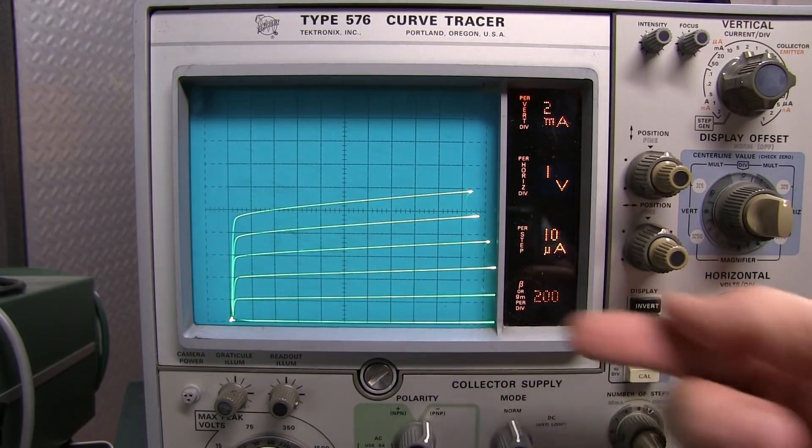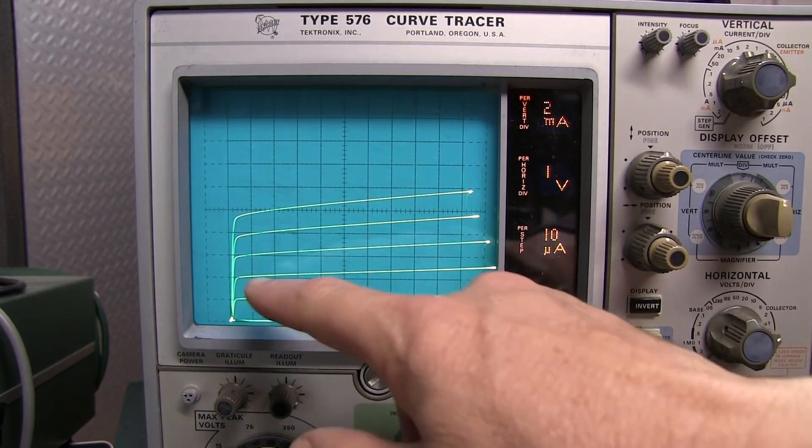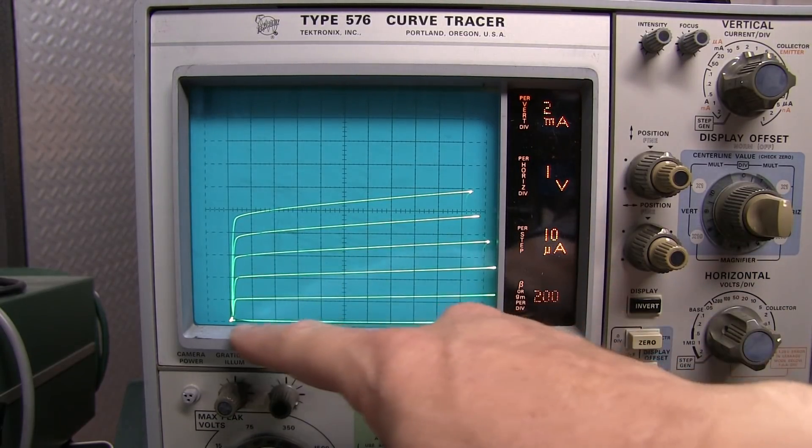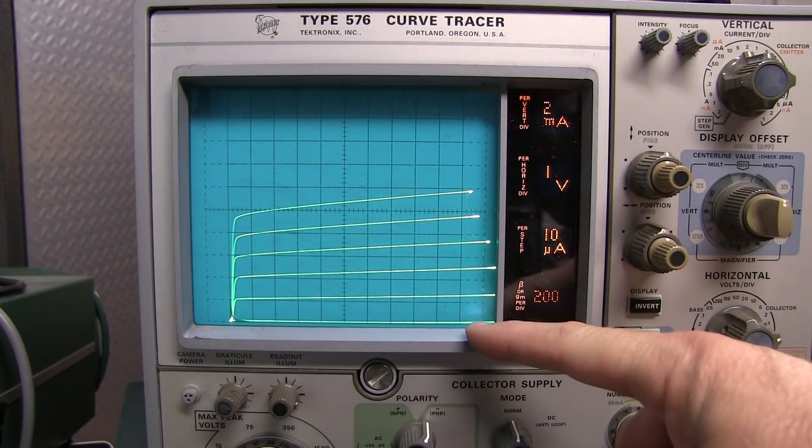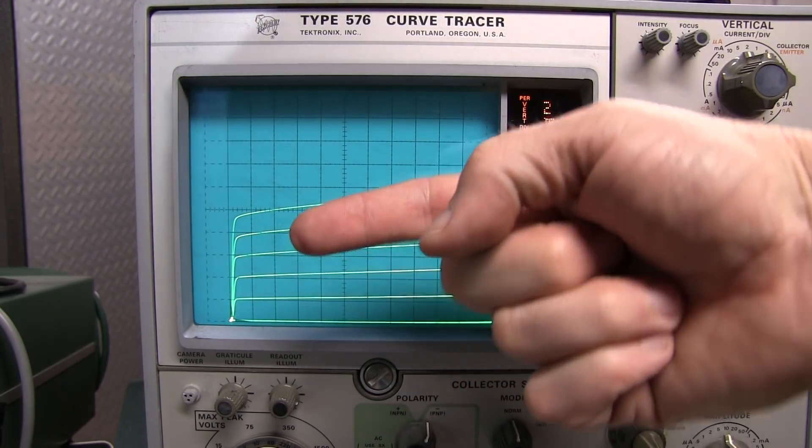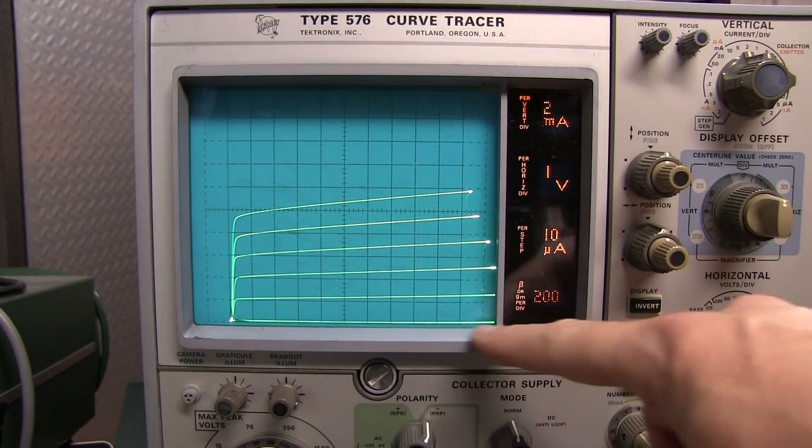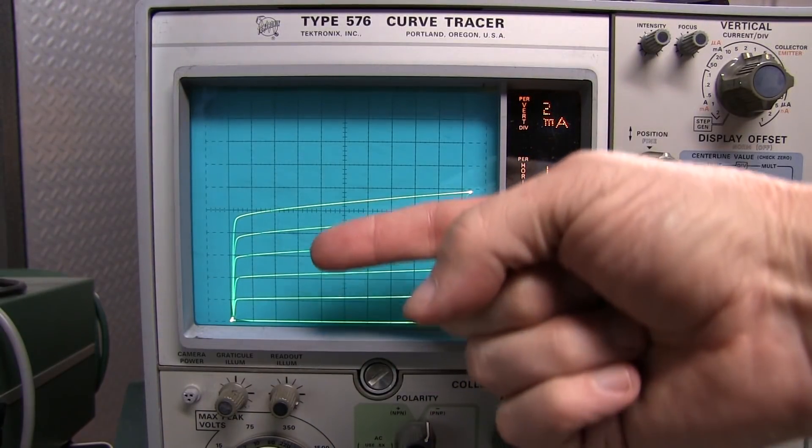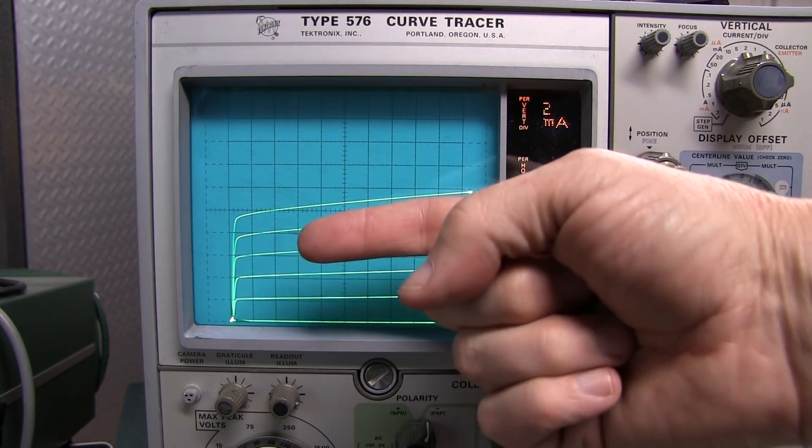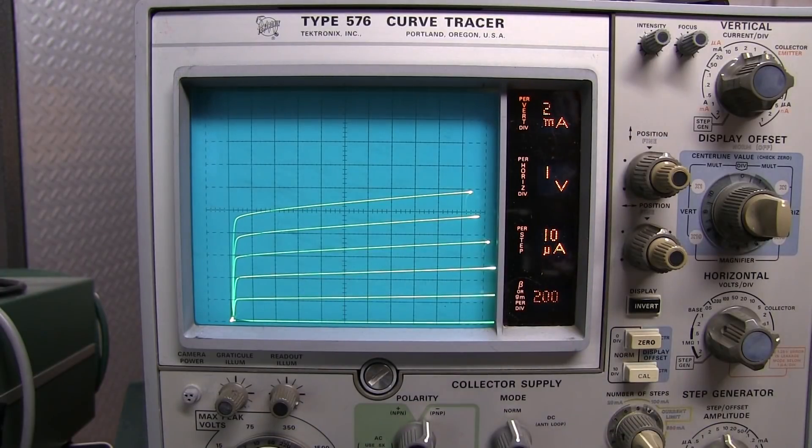Ideally what you would see at a constant base current, you'd think you want to have a constant collector current regardless of VCE. But you can see that's not the case. There's a little bit of a tilt to these curves, which means that beta effectively is not constant versus VCE. The slope of this line is effectively giving us a hint to the non-infinite output impedance of the collector.